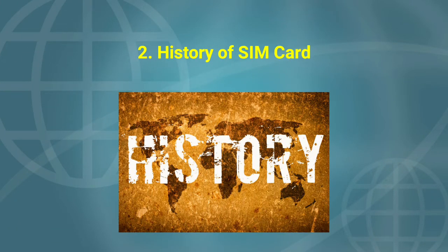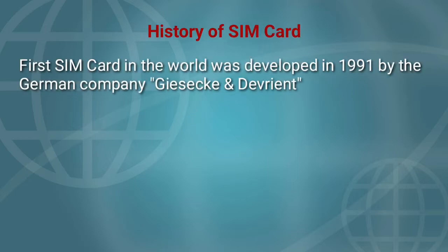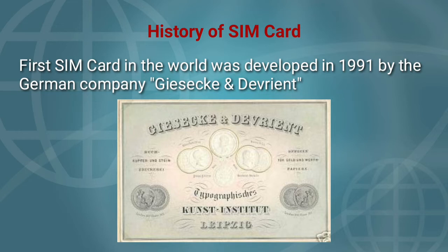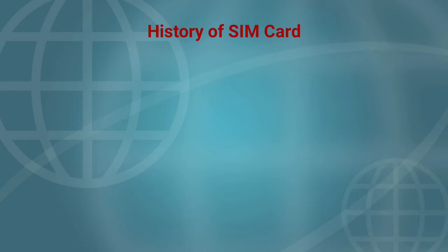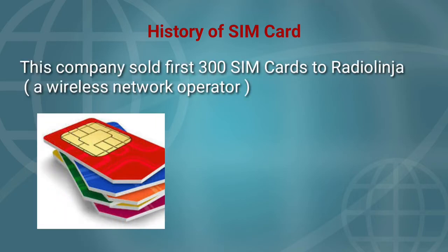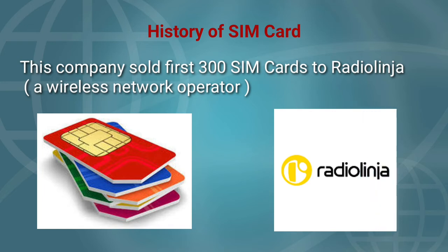History of SIM card. The first SIM card in the world was developed in 1991 by the German company Giesecke & Devrient. This company sold the first 300 SIM cards to Radiolinja, a wireless network operator.